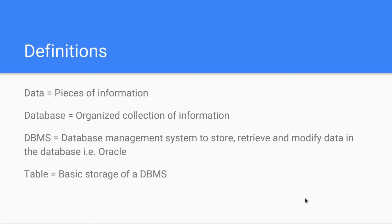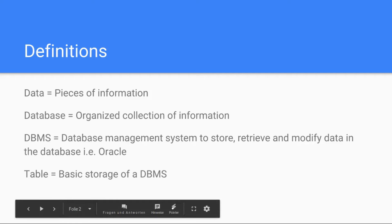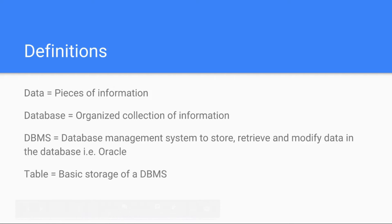You have a DBMS, which stands for Database Management System. This allows you to store data, retrieve data, and modify data in the database — in this organized collection. Oracle, for example, provides a DBMS. This is basically what we're going to work with. The basic storage unit of a database management system is a table. This is the most important thing when you work with databases, because this is where you get your information — the information you retrieve, modify, delete, or create.